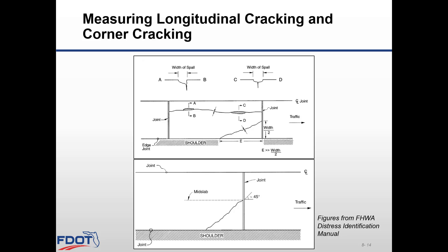Longitudinal cracks are cracks predominantly parallel to the pavement centerline. Determine spalling as shown in details AB and CD. Make note if there is faulting or differential elevation between the two sides of the slab where longitudinal cracking occurred. The bottom graphic shows how to measure corner cracking — a corner of the slab is separated by a crack that intersects the adjacent longitudinal and transfer joint at approximately a 45-degree angle with the direction of traffic. The level of severity can be determined using Standard Plans Index 353-001, page 2 of 2.